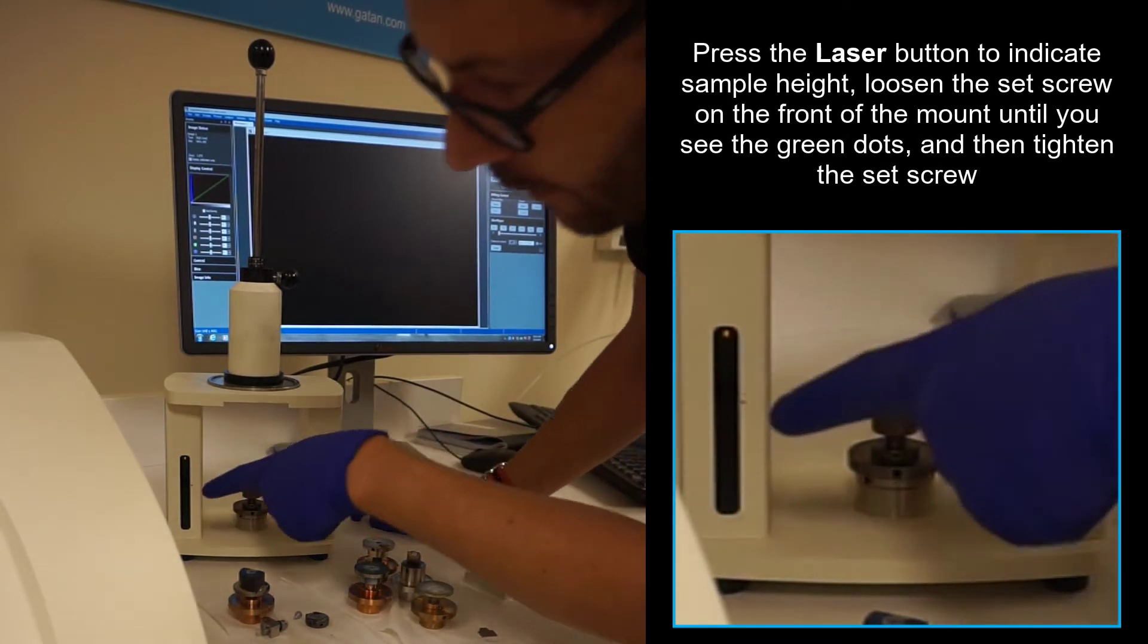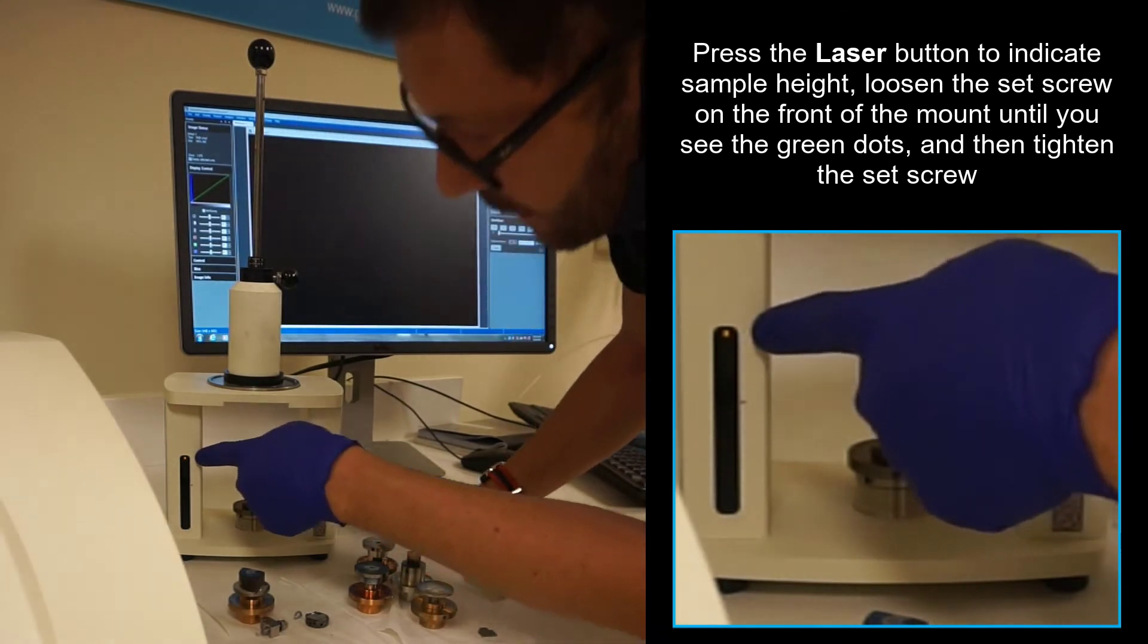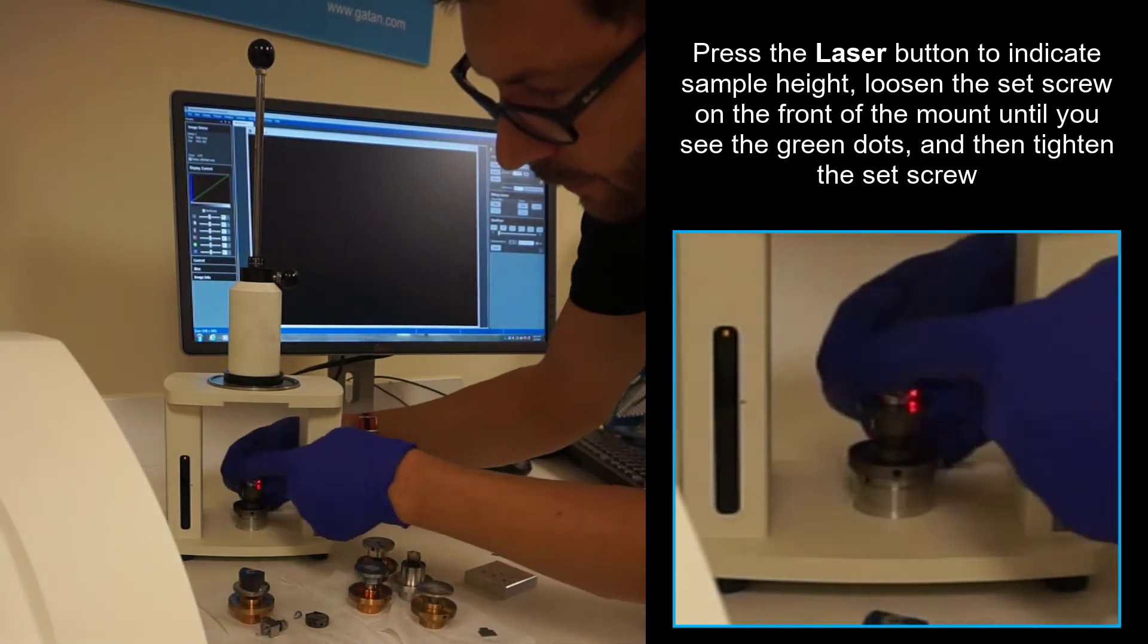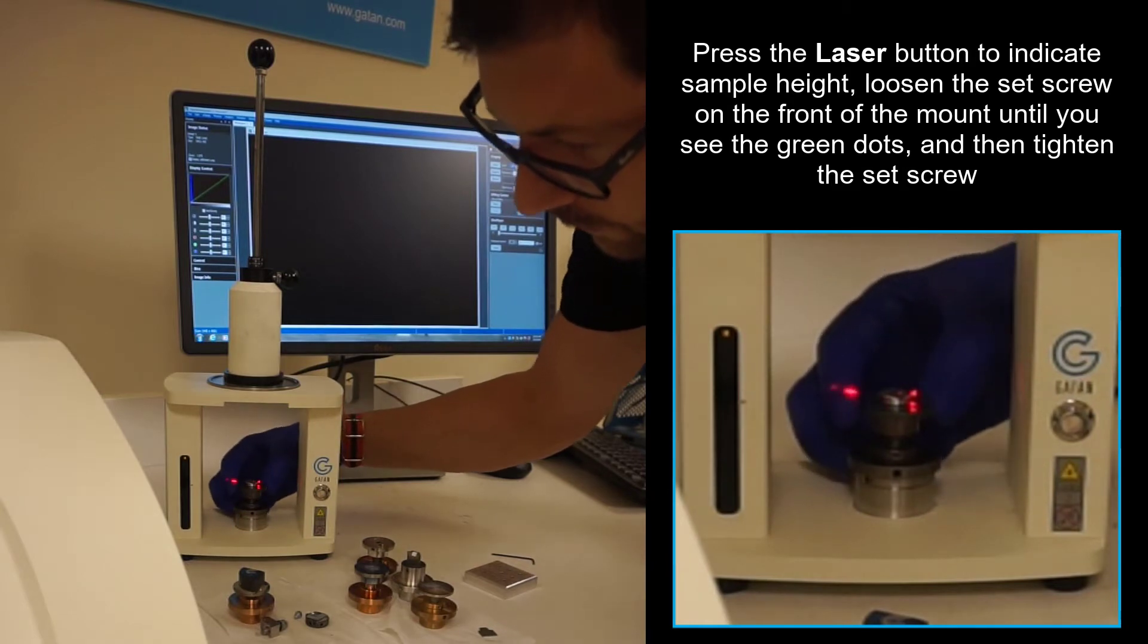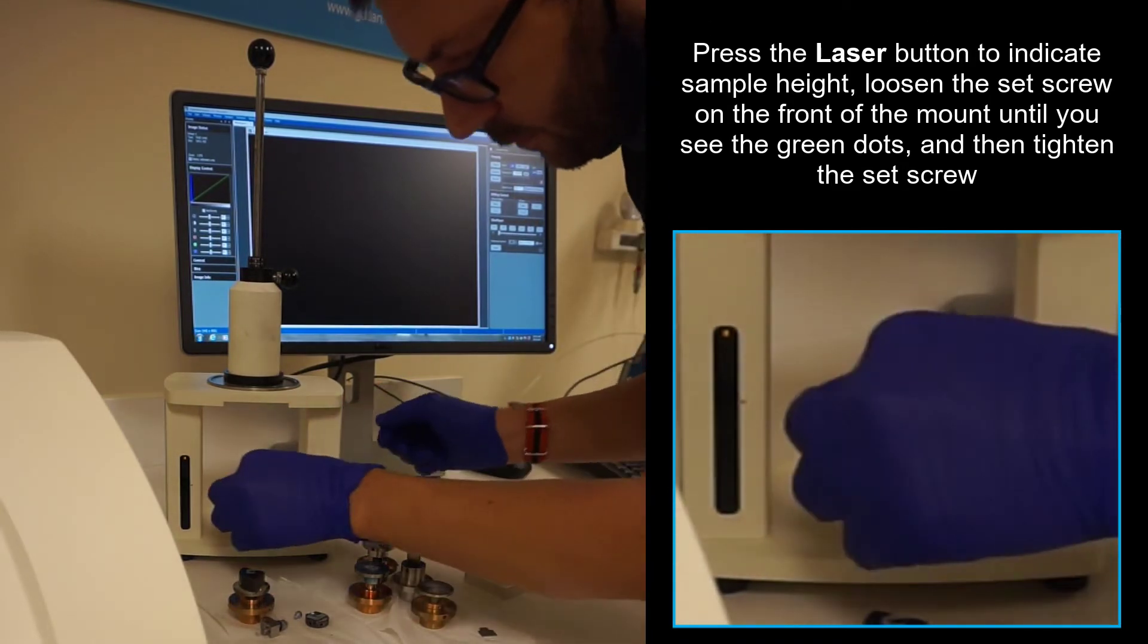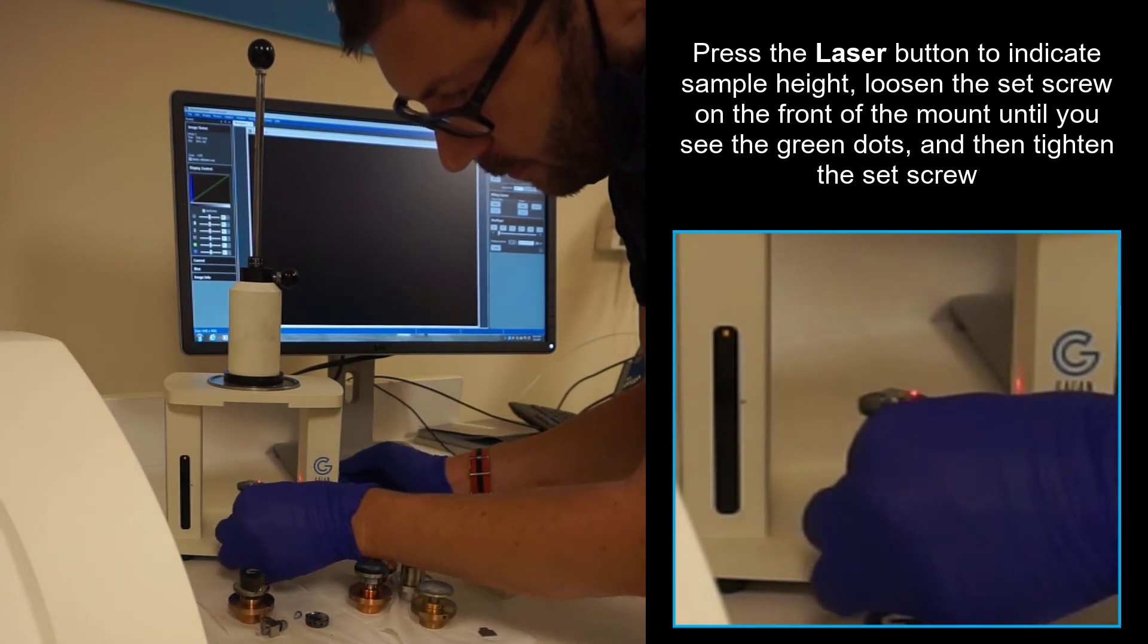Push the button to see where the sample is. The sample is too high. There's a little LED light here with the sensor. We need to lower it, which is held by a set screw.